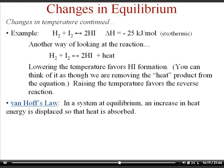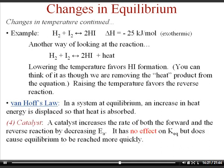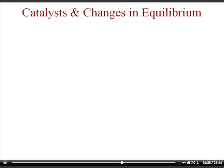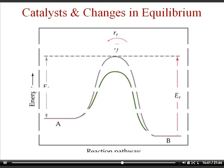Van't Hoff's law states that if a system is at equilibrium, an increase in heat energy is displaced so that heat is absorbed — this is essentially Le Chatelier's principle applied specifically to temperature changes, so you don't need to memorize it separately. Surprisingly, a catalyst does not affect an equilibrium situation. If a reaction is at equilibrium and you add a catalyst, it speeds up both the forward and reverse reactions equally but doesn't shift the equilibrium left or right or change the equilibrium constant.